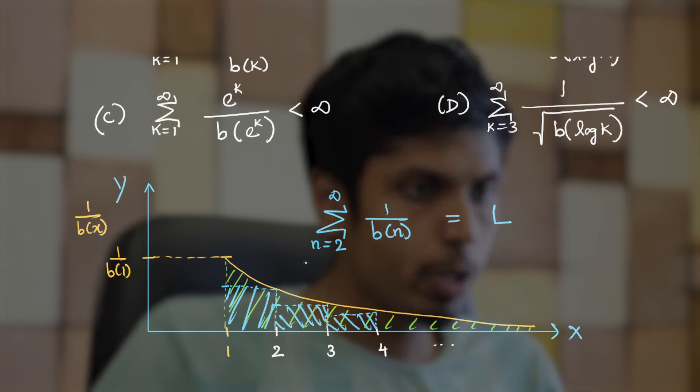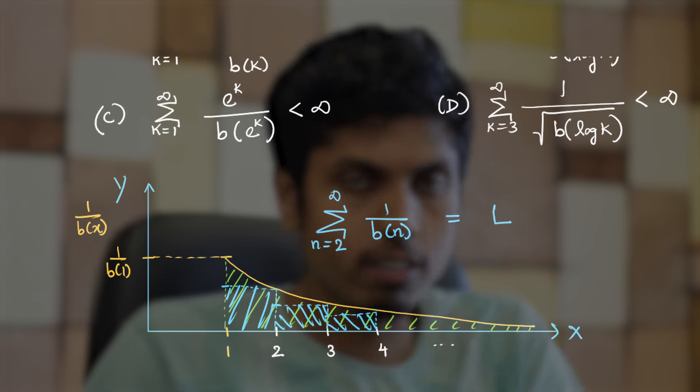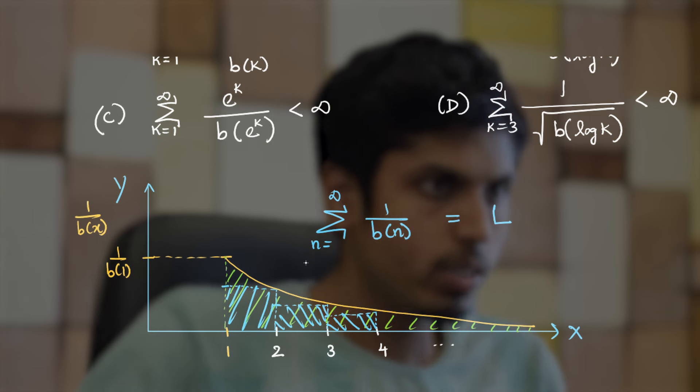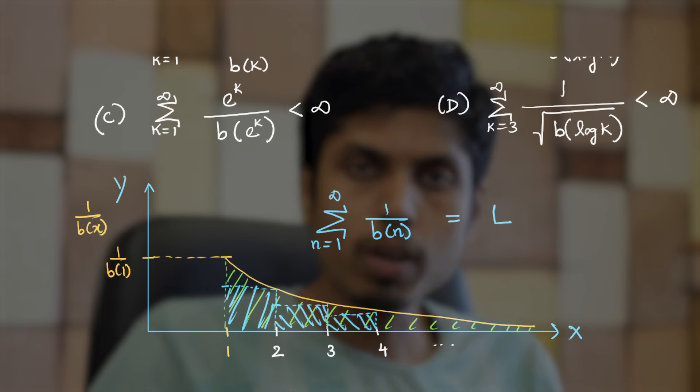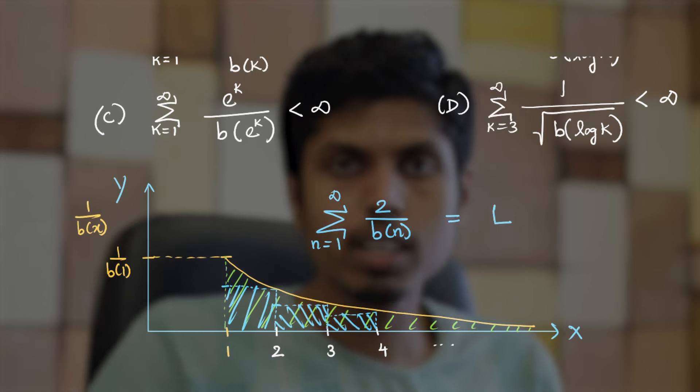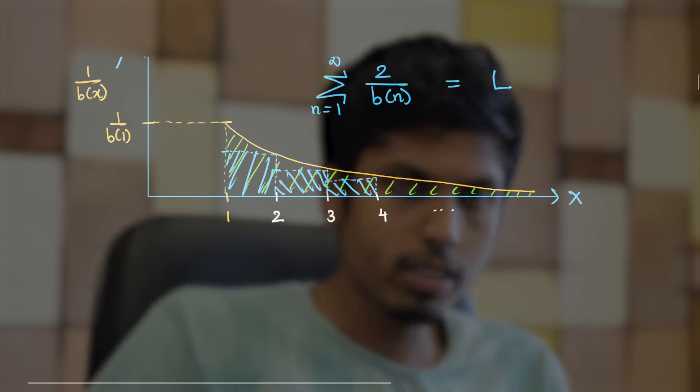That means if I add 1/b(1) on both sides, it will still converge to a value. So, let me make n going from 1 to infinity and also multiplying by 2 does not make any difference. So, if we multiply by 2, you will still get that it converges. Let's say it is L. Let us consider a different sum.